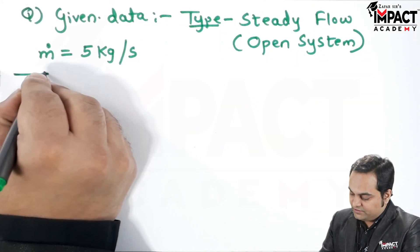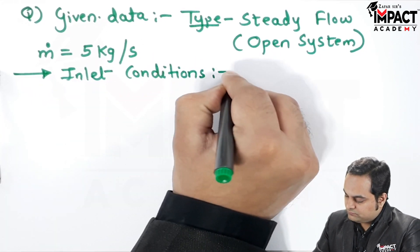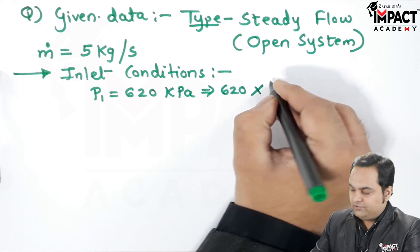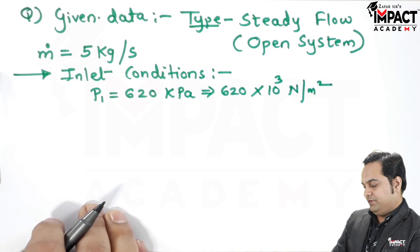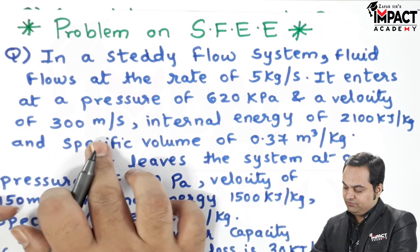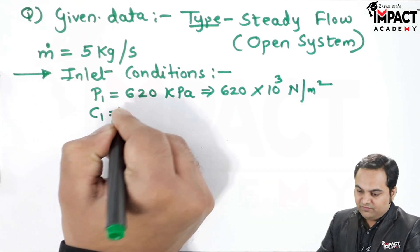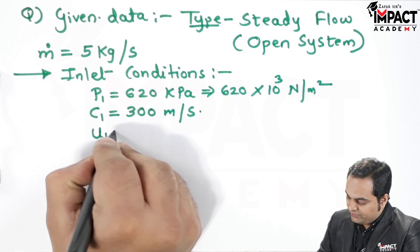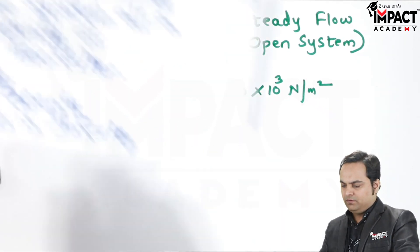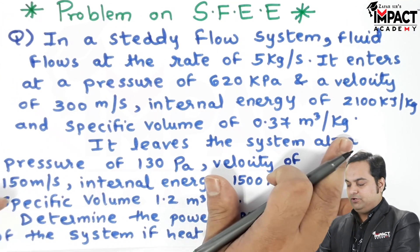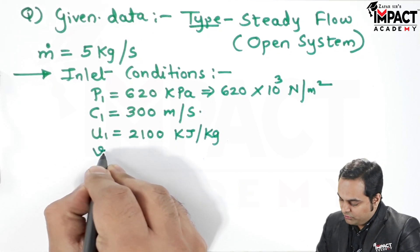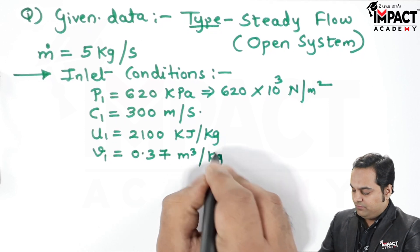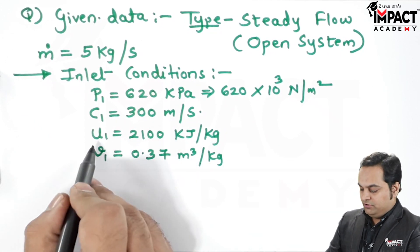It enters at a pressure of 620 kilo Pascal, so these are the inlet conditions. The inlet pressure P1 is 620 kilo Pascal, which multiplied by 10 raised to 3 gives Newton per meter square. The inlet velocity C1 is 300 meter per second, internal energy at inlet U1 is 2100 kilo Joule per kg, and specific volume v1 is 0.37 meter cube per kg. Values in per kg form are denoted by small letters — small u1, small v1.